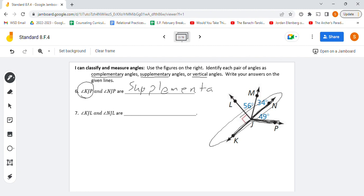On the next one, we have KJL and NJL. So let's find those on our diagram. We've got KJL. It's this 90-degree angle right here. And NJL would be that angle right there. Again, those two form a straight line, so those would also be supplementary.